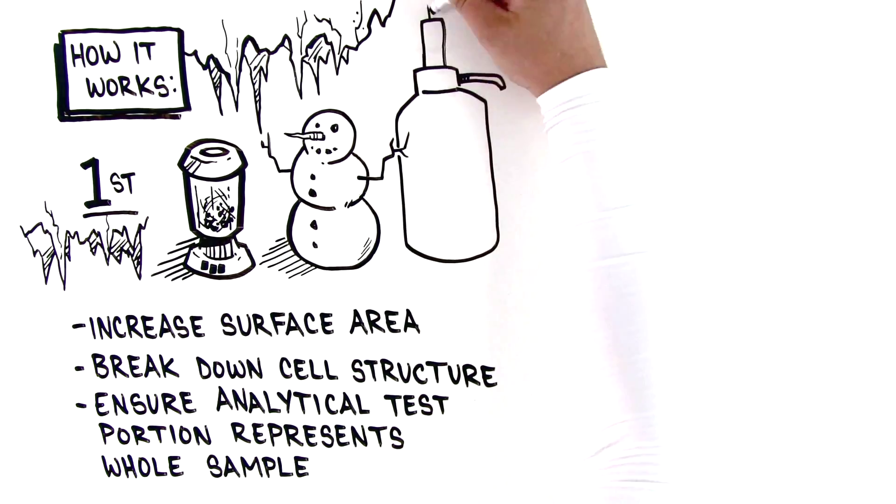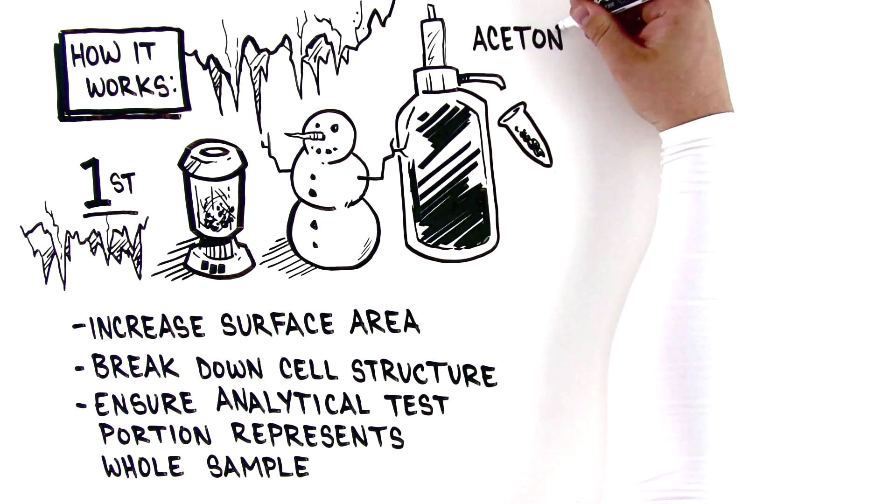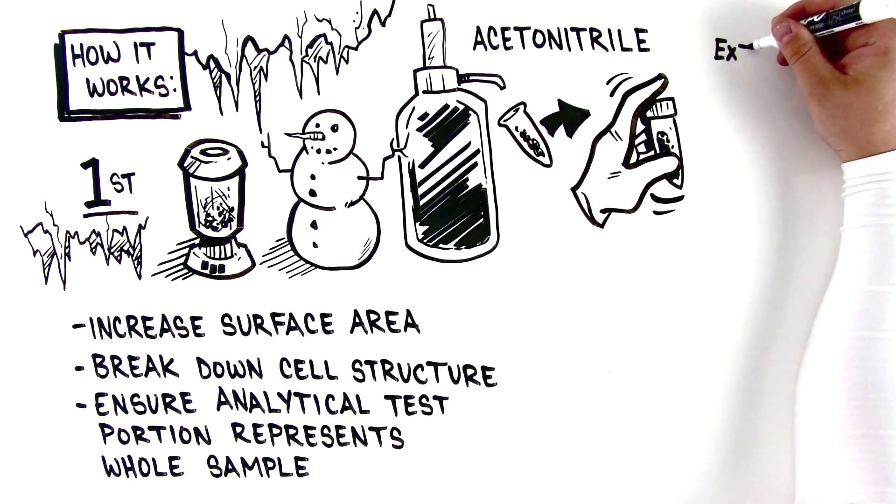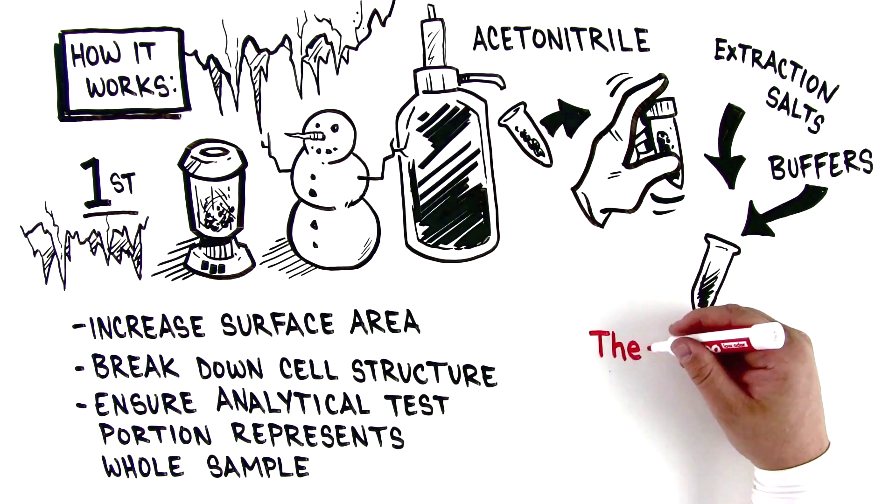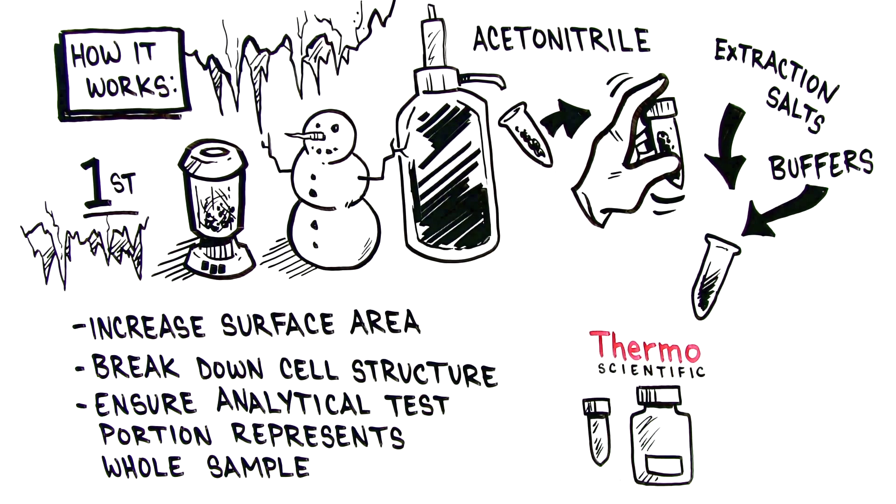Next, add the internal standard and the extraction solvent, typically acetonitrile, into the centrifuge tube with your sample. Shake vigorously, then add the extraction salts and buffers, and shake again. For this step, you can use Thermo Scientific prepackaged salts and centrifuge tubes.